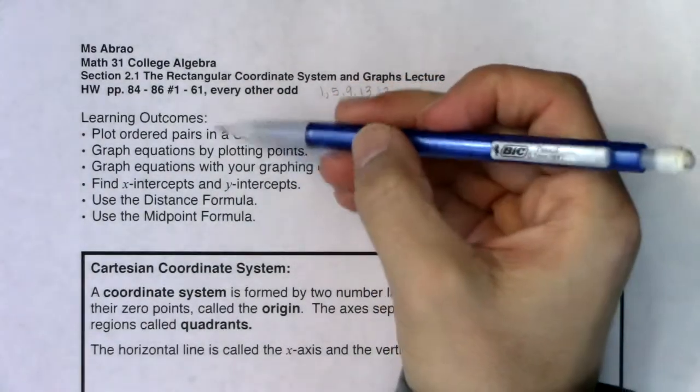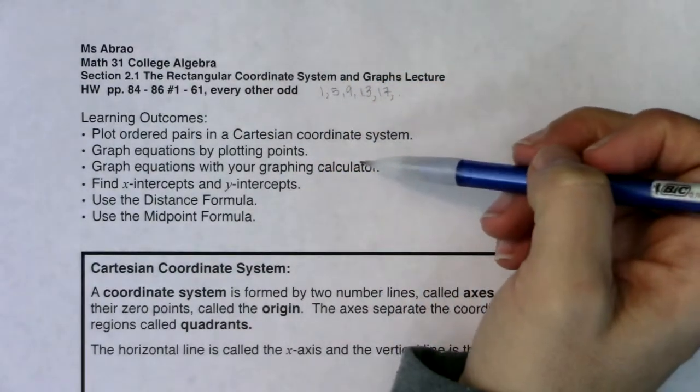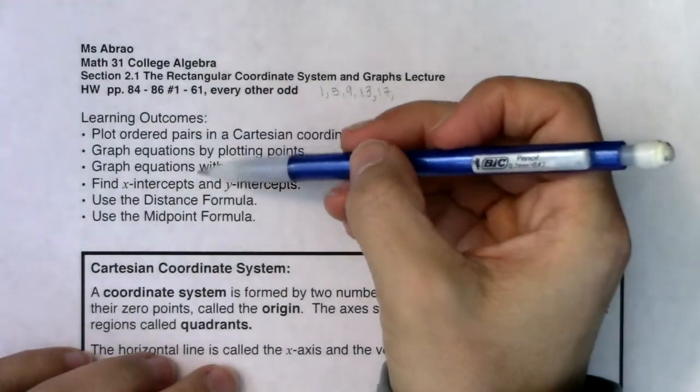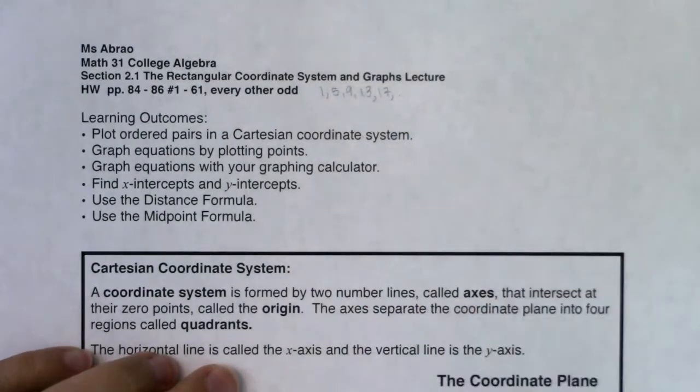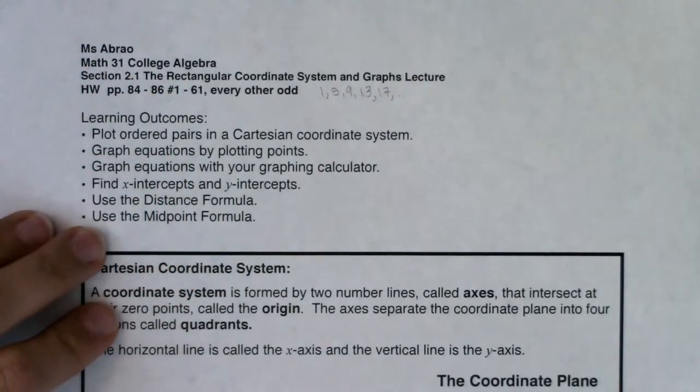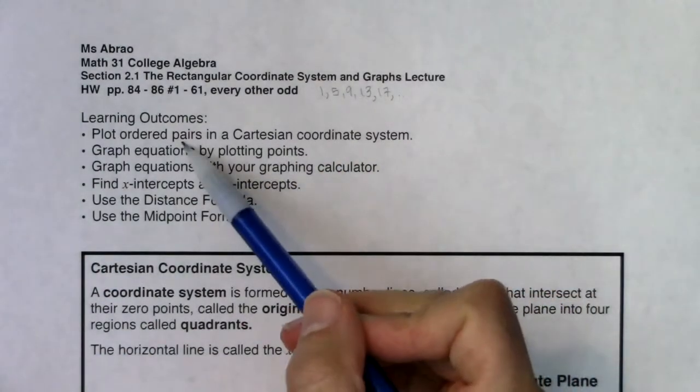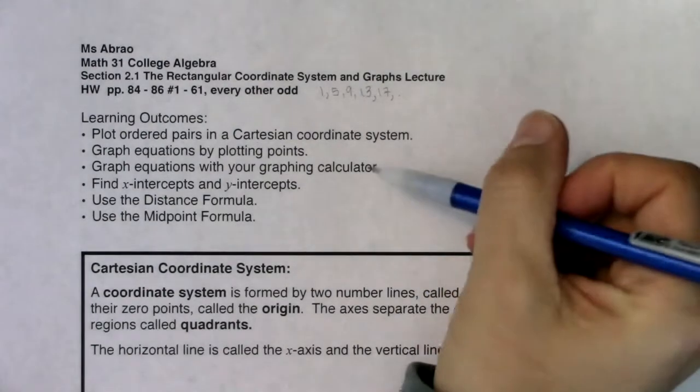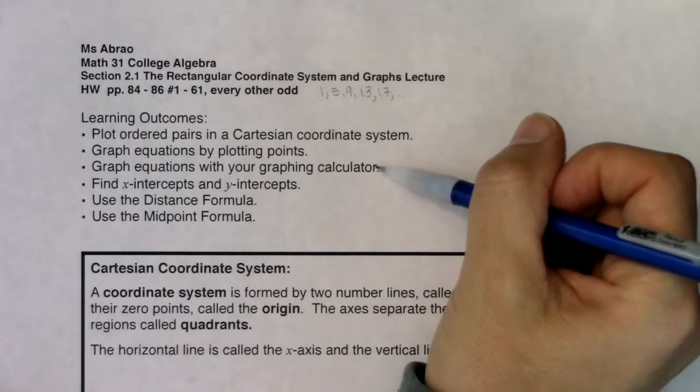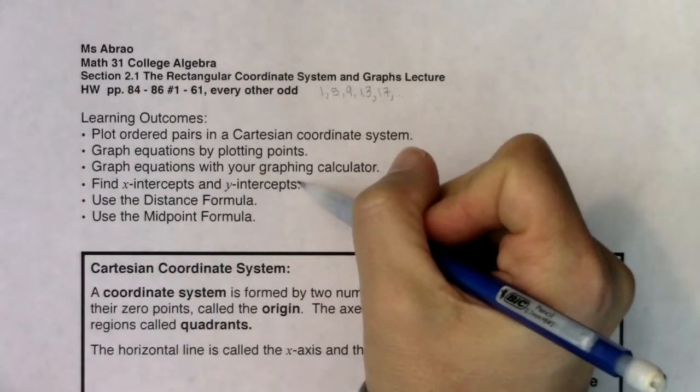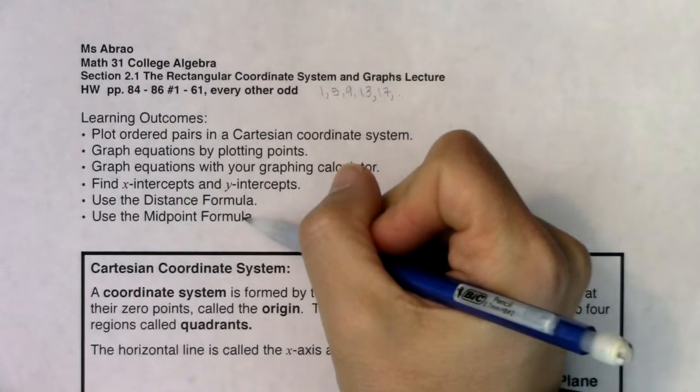So the next thing that you'll see in every lecture packet is the learning outcomes. And for the most part, in chapters 2 and 3, it should be reviewed. Maybe not all of it, but a large portion of it. So here you see these learning outcomes and I hope that they're familiar to you. So we're going to plot some ordered pairs in the Cartesian coordinate system. We're going to graph equations by plotting points. We're going to graph equations with your graphing calculator. You need either a TI-83 or a TI-84. We're going to review how to find x and y-intercepts. We're going to make sure we know how to use the distance formula and use the midpoint formula.